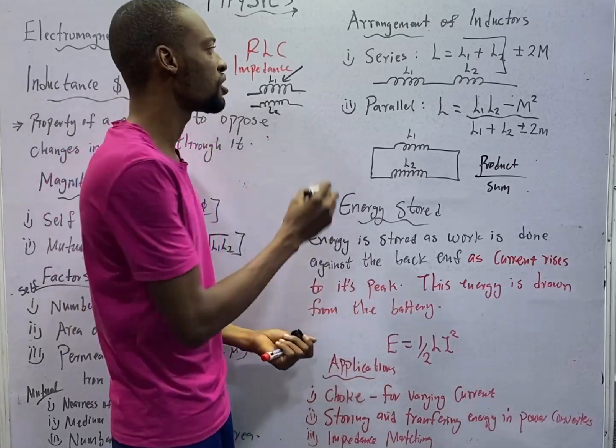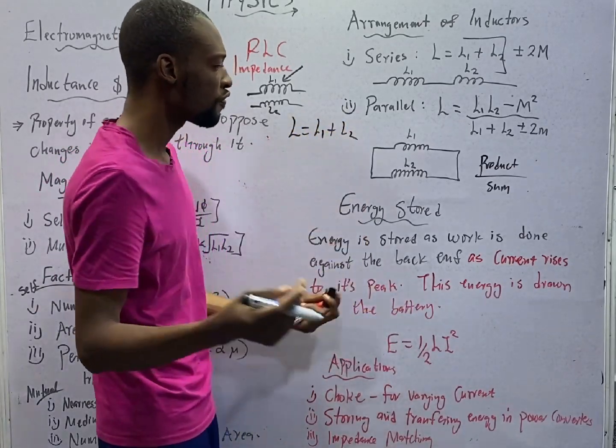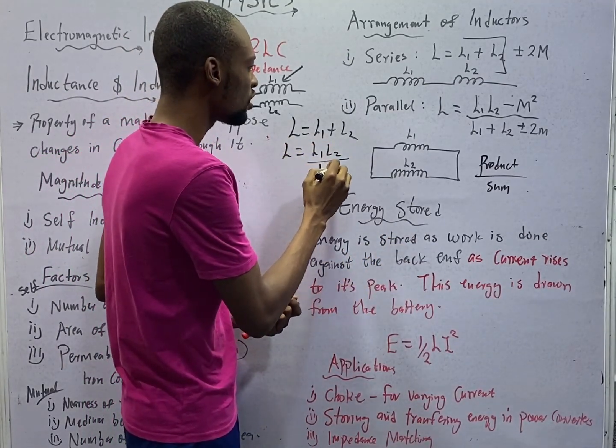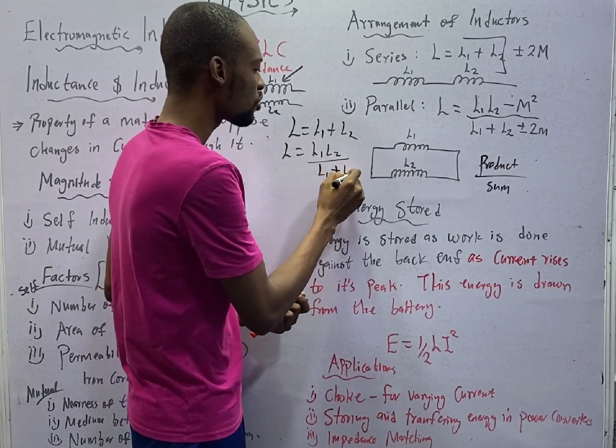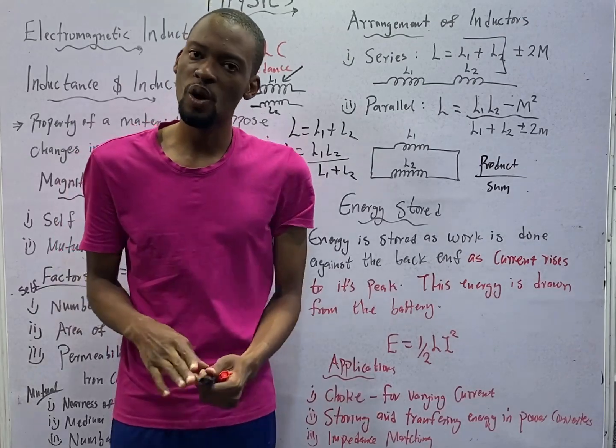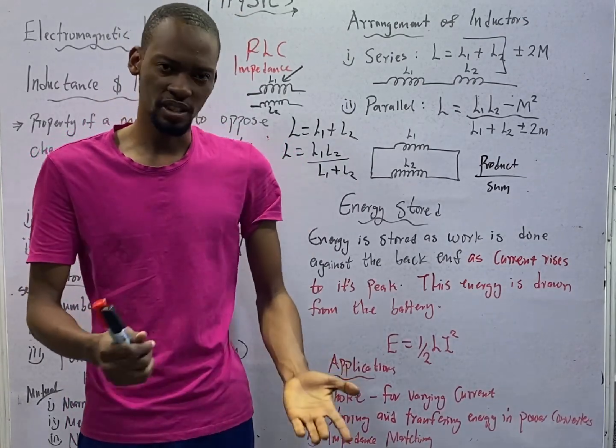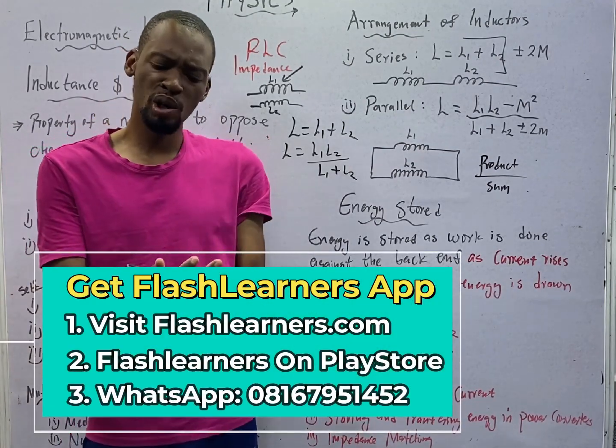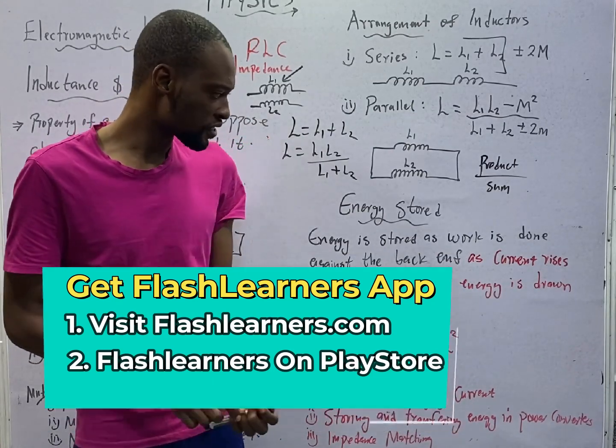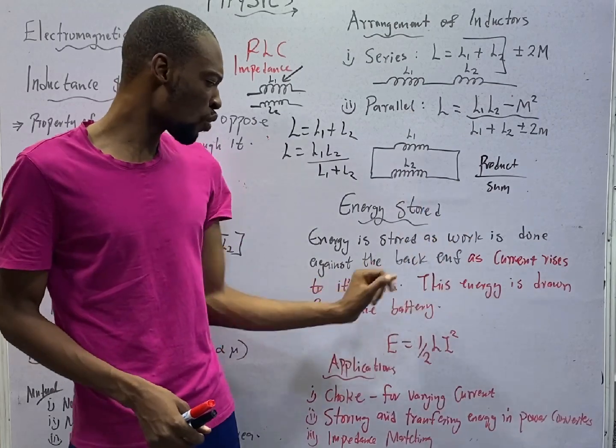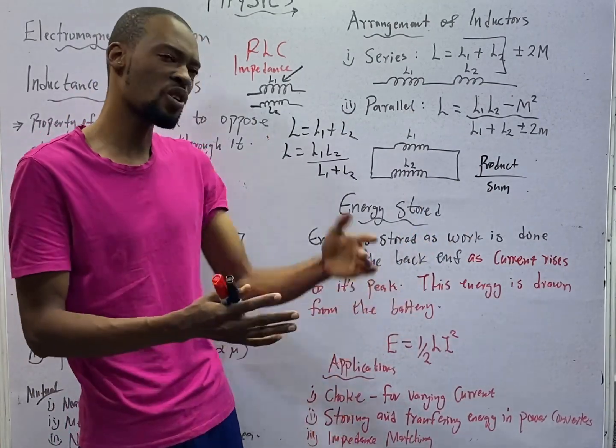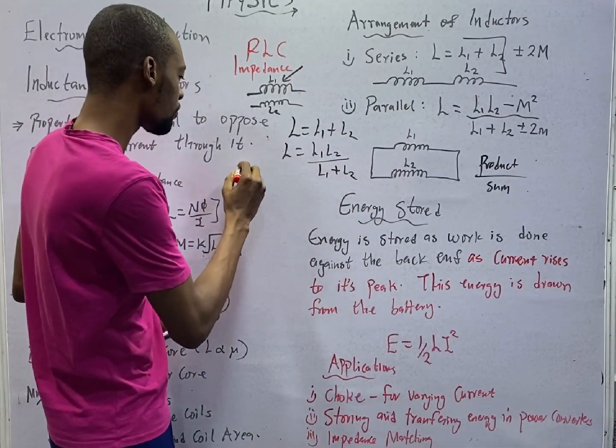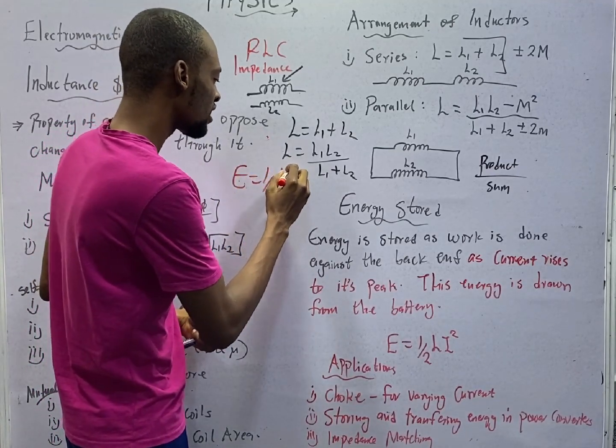In summary, for series, L equals L1 plus L2. For parallel, L equals L1 L2 over L1 plus L2. Now, energy can be stored in inductor, just like we have in capacitors. And only half of the energy supplied by the inductor is stored. The energy stored in inductor is drawn on the battery. And energy is stored as work is done against the back EMF as current rises to its highest level.